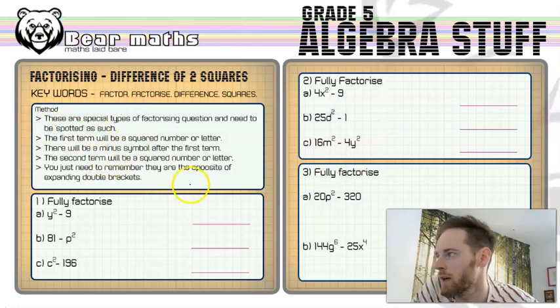Now these are special types of factorising questions where you need to spot them. You need to figure out that it's a difference of two squares question. And once you've done that, it's really easy to do. So the first term will be a squared number or letter in the question you're given. There will be a minus symbol and there will always be a minus symbol because that's what the difference is. It's a takeaway. The second term will be a squared number or letter as well, just like the first term.